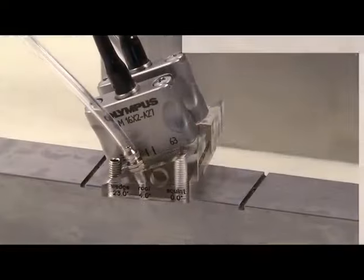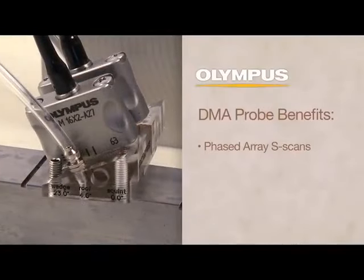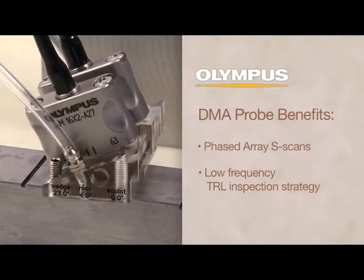Detection and sizing of difficult-to-penetrate materials is improved by combining the benefits of phased array S-scans and low-frequency transmit-receive or TRL inspection strategy.